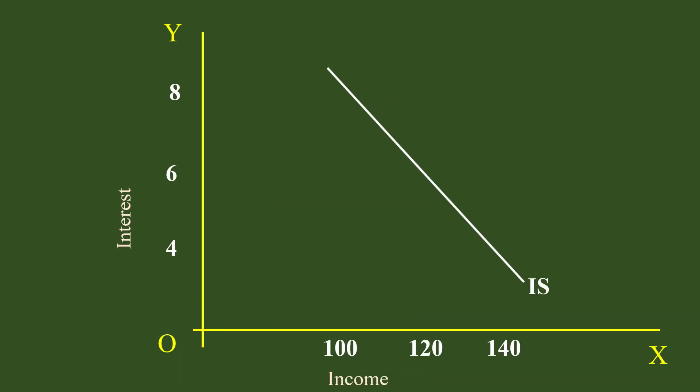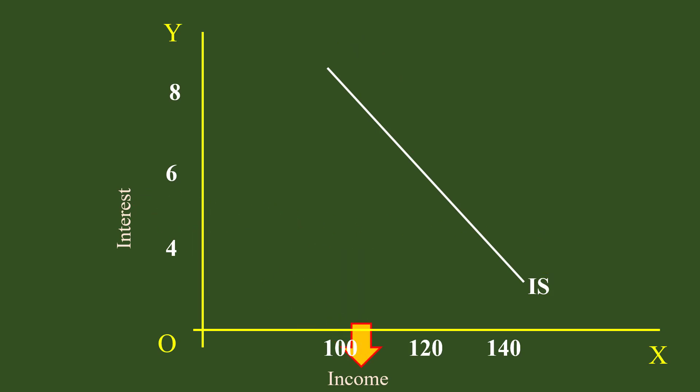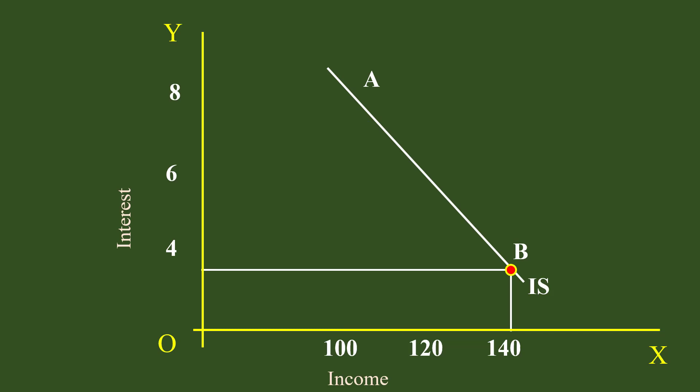Take the IS curve first. It slopes downward from left to right and relates interest and income. The relation between them is negative. When interest falls from 8% to 4%, income increases from Rs.100 to Rs.140. The goods market moves down from point A to B. This is movement along the curve.